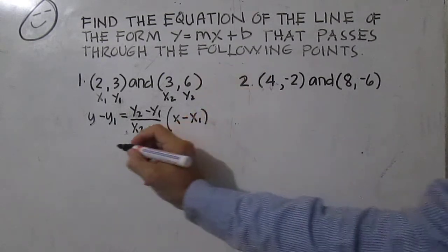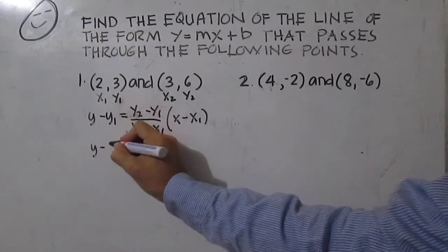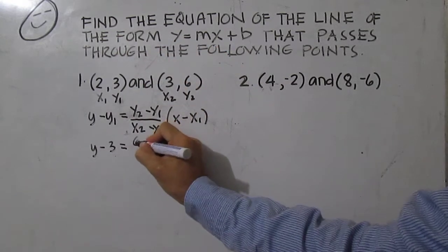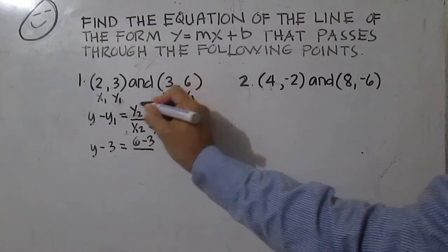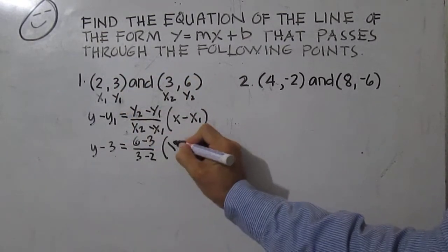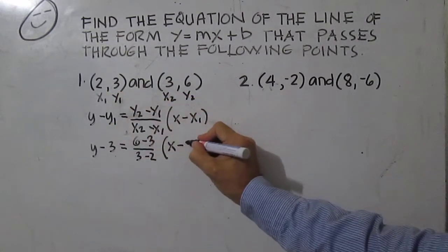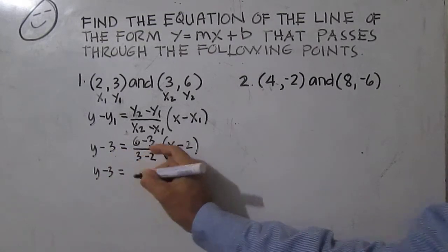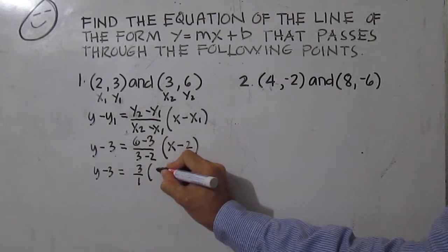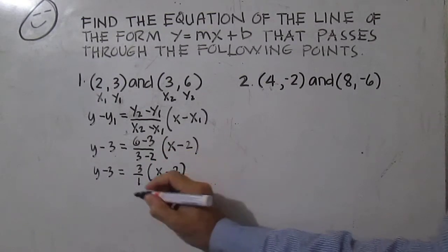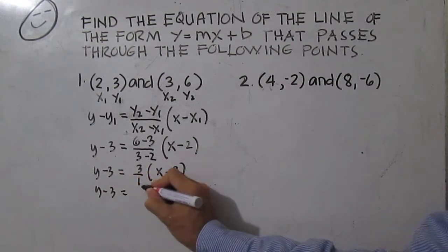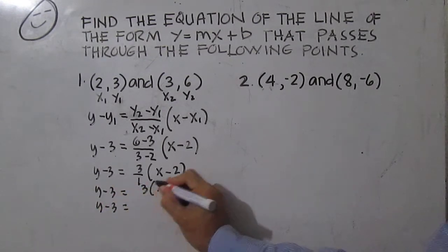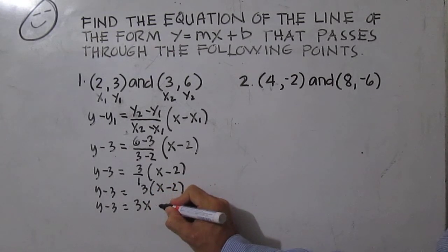Then substitute the values: y minus y sub one is three, equals six minus three over three minus two, times x minus x sub one is two. Simplify — this is three over one times x minus two. So y minus three equals three times x minus two, then distribute: y minus three equals three x minus six.